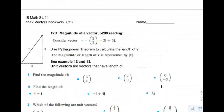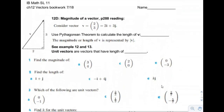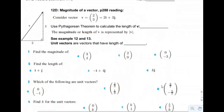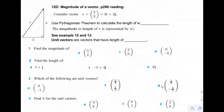Page 7 of vectors, 12d: magnitude of a vector. Consider that the vector v is expressed as x component 2, y component 3, or 2i plus 3j.